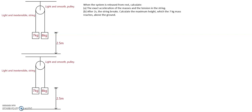The string is light and inextensible. Inextensible means that the string will not stretch when the two masses are attached to each end. Initially, the two masses are 2.5 meters above the ground. The system is then released from rest, and part A is to calculate the exact acceleration of the masses and the exact tension in the string.